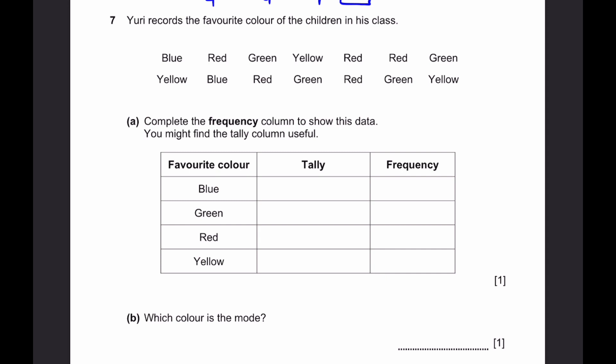Question 7. Riri records the favorite color of the children in this class. Complete the frequency column to show this data. Let's count using tally. There's one blue, one red, one green, one yellow, two more red, one green, one yellow, one blue, another red, another green, another red, so that's 5 red, another green and another yellow. Blue is 2, green is 4, red is 5, yellow is 3. You can do that by counting the number of lines.